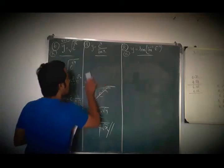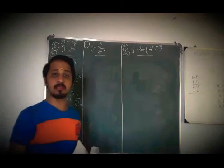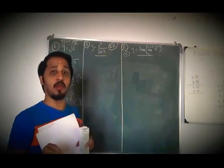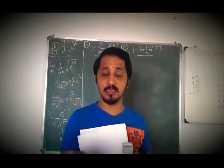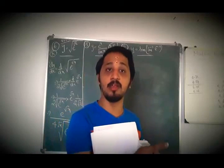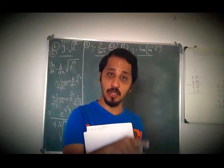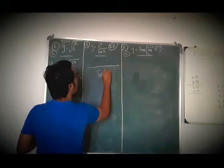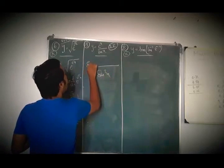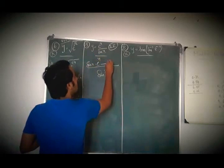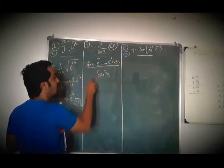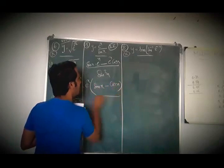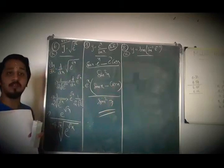Seventh question: y = e^x / sin x, which is a quotient rule. Quotient rule: v·(du/dx) − u·(dv/dx), all divided by v². Here the second function squared gives sin²x. Second function into first function's derivative minus first function into second function's derivative, all divided by sin²x. Taking e^x common from the numerator, we get dy/dx = e^x(sin x − cos x) / sin²x.